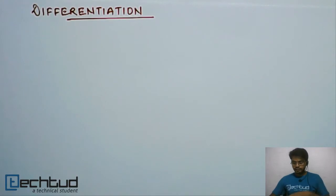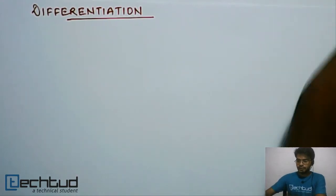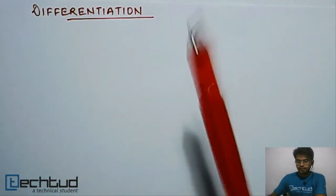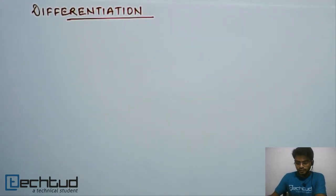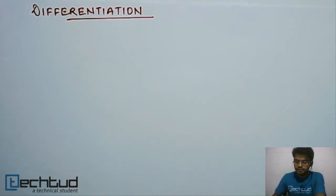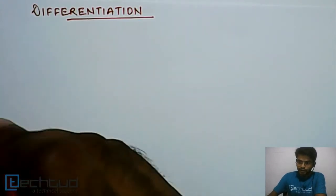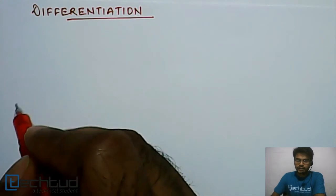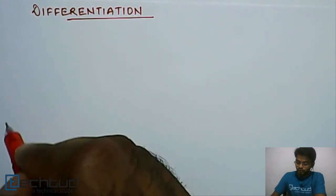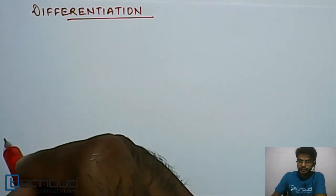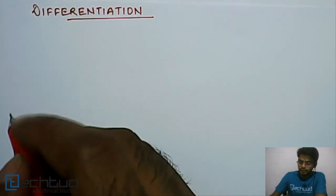Hello everyone, welcome back to Tector.com. In this lecture we are starting differentiation. Differentiation, or derivative of a function, means we are trying to calculate the slope of that function at that point.